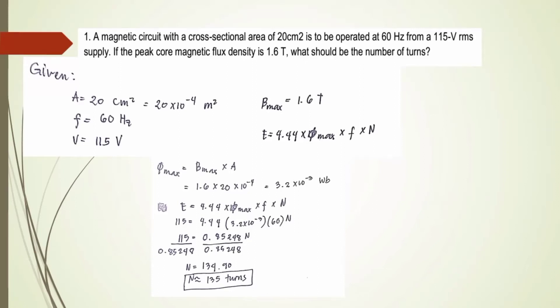Number 1. A magnetic circuit with a cross-sectional area of 20 cm² is to be operated at 60 Hz from a 115 VRMS supply.